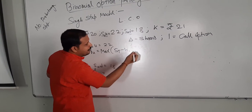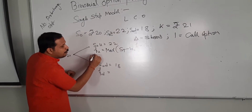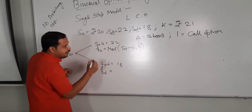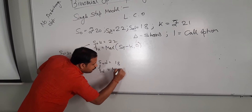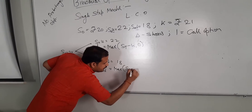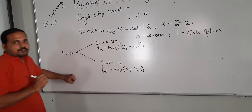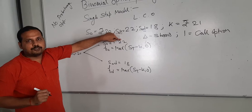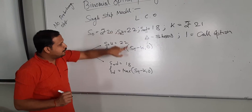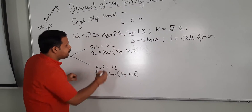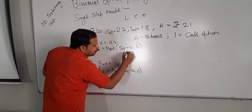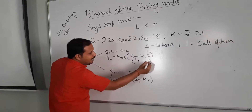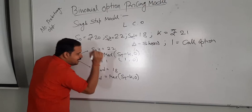The value of FU will be equal to maximum of either ST minus K or 0. Similarly, in case of FD, it will be maximum of either ST minus K or 0. On the future date, the price of the stock is 22, so ST is 22 and K is 21. Subtracting 22 minus 21, we get 1. So the maximum value out of 1 and 0 is 1, and the value of FU will be equal to 1.